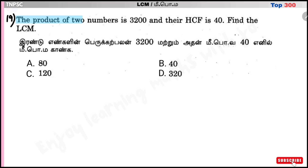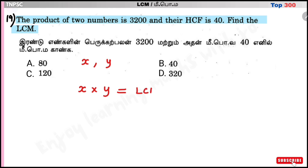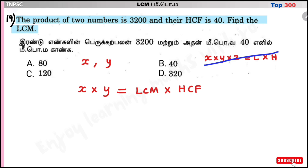Question number 19: The product of two numbers is 3200 and their HCF is 40. Find the LCM. The formula states that the product of two numbers equals LCM × HCF.